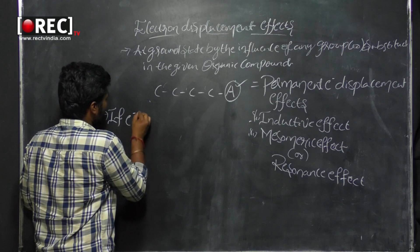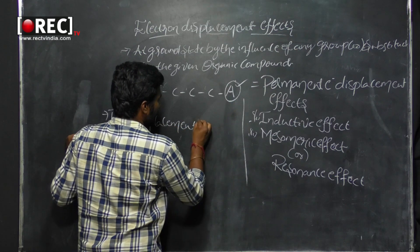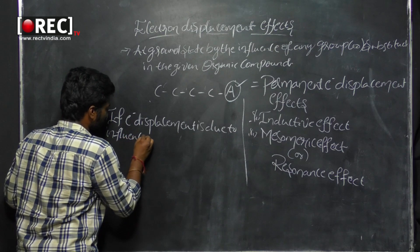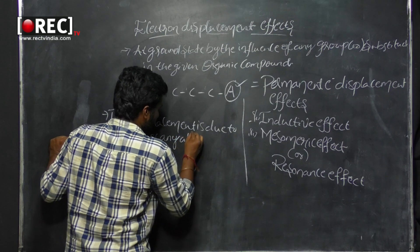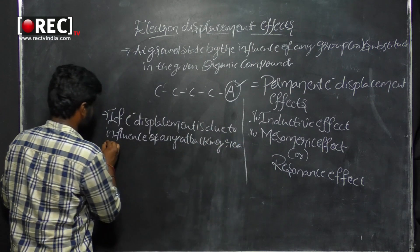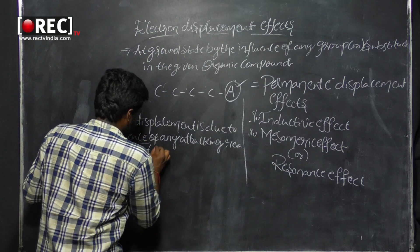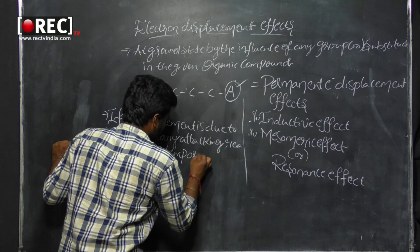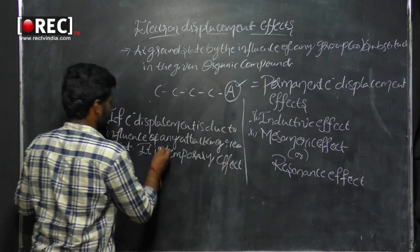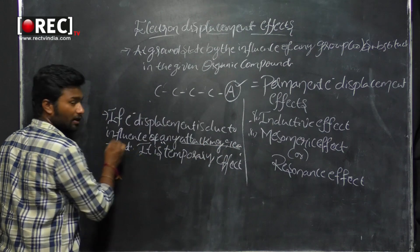If electron displacement is due to the influence of any attacking reagent, then that is called a temporary effect. As long as the reagent is present, electron displacement takes place. If the reagent is absent, the electrons shift back to their original position — hence this is called a temporary effect.